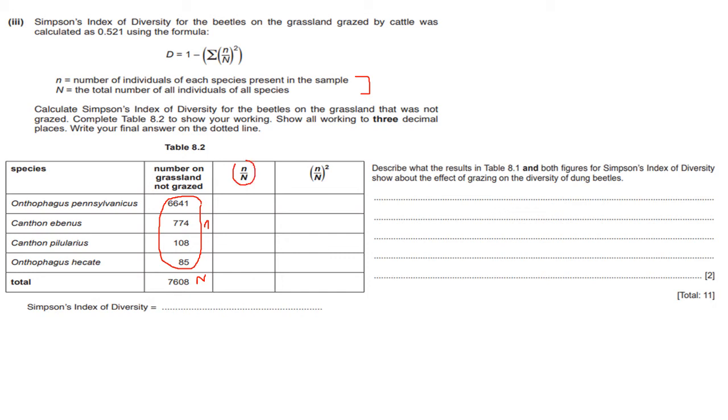So when it says n divided by small n divided by big N, you're typically going to take for example for the first one you will take 6,641. So I'm just going to use my calculator here. 6,641 divided by 7,608 and that gives you 0.873. So the reason why I'm using three decimal places is because when CIE gave me the Simpson's index of diversity they used three decimal places. So I'm going to keep with the same convention. So this is going to be 0.873.